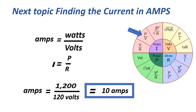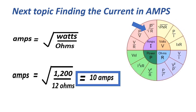The next current formula: amps equals watts over volts, or I equals P over V, equals 10 amps. And the next: amps equals the square root of watts over ohms, equals 10 amperes.